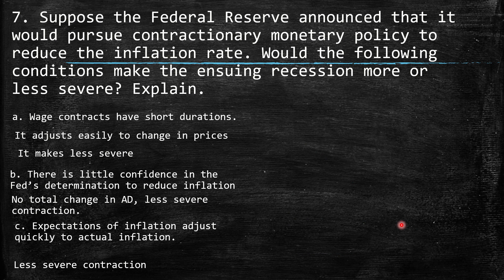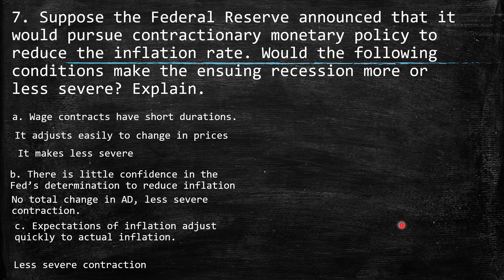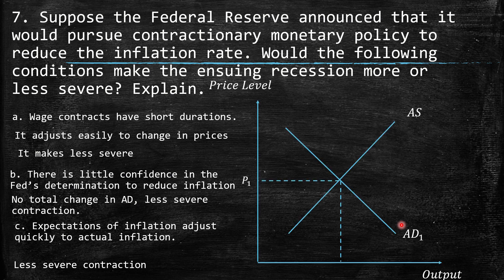Question 7: Suppose the Federal Reserve announced that it would pursue a contractionary monetary policy to reduce the inflation rate. Would the following conditions make this resulting recession more or less severe? Here we have the situation of aggregate demand — this is a recession, a contraction in the level of prices and in the level of output. Part A: Wage contracts have short duration. If wages adjust easily to changes in prices, it will make the recession less severe, because all wages will adjust better to the change in prices.